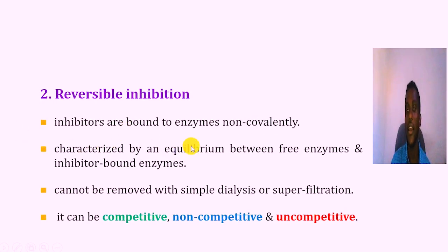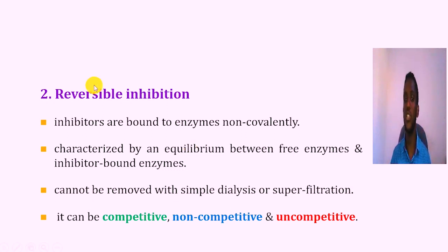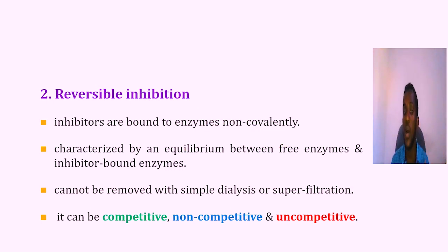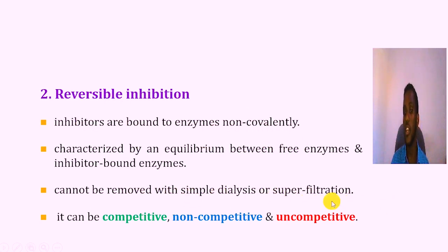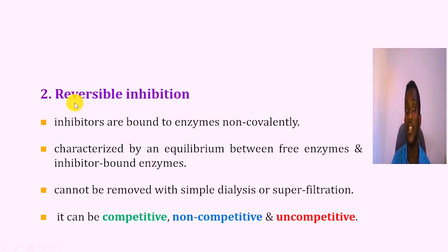So, the inhibitor binds to the active site or the allosteric site of the enzyme, so that the enzyme is not functional. If the binding is covalent, you cannot remove the inhibitor. If the binding is non-covalent, you can block the enzyme and inhibit it reversibly.